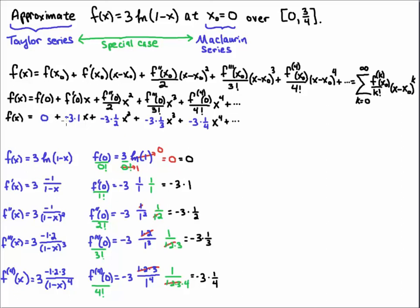we have 0 plus minus 3 times 1, x, plus minus 3 times 1 half, x squared, plus minus 3 times 1 third, x cubed, plus minus 3 times 1 fourth, x to the 4th. And I think you can see the pattern that is developing now. So, if I factor out the minus 3, then it looks like the pattern is x plus 1 half, x squared, plus 1 third, x cubed, plus 1 fourth, x to the 4th, or x to the k over k, and we're starting k at 1, and we're going off to infinity. So, this is what our series looks like.